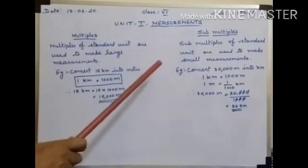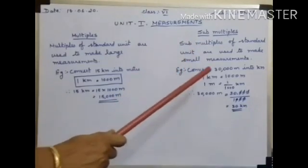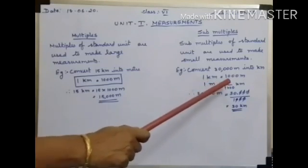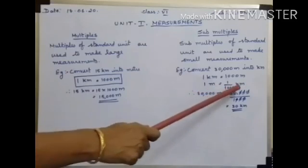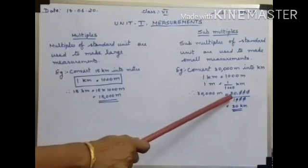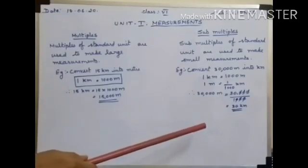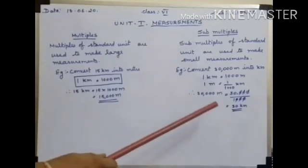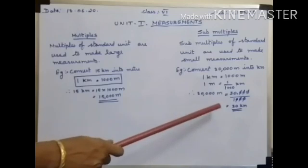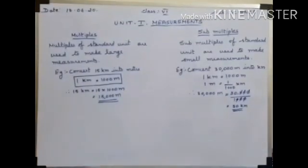Now, what are submultiples? Submultiples of a standard unit are used to make small measurements. For example, let us convert 30,000 meters into kilometers. According to the formula, 1 kilometer equals 1000 meters, so 1 meter equals 1/1000 kilometers. Therefore, 30,000 meters equals 30,000 ÷ 1000 = 30 kilometers. Another example: convert 25,000 meters into kilometers. Similarly, 25,000 ÷ 1000 = 25 kilometers.